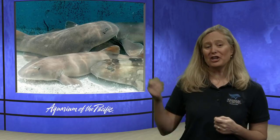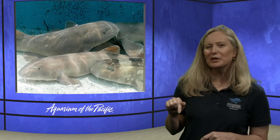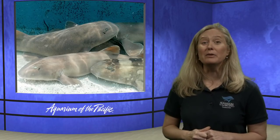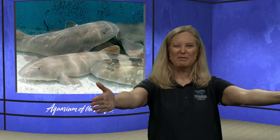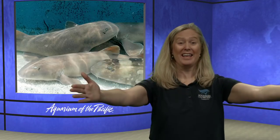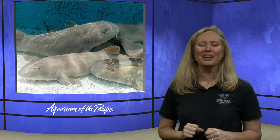One shark we have at Shark Lagoon is the bamboo shark — guests can actually pet them there. How long are bamboo sharks? If you take your hands and put them in a V shape above your head and spread them out, that's about three and a half feet long — that's how big a bamboo shark is. In fact, you're probably bigger than a bamboo shark. And that size matters: 50% of all sharks in the ocean will never get bigger than three and a half feet.